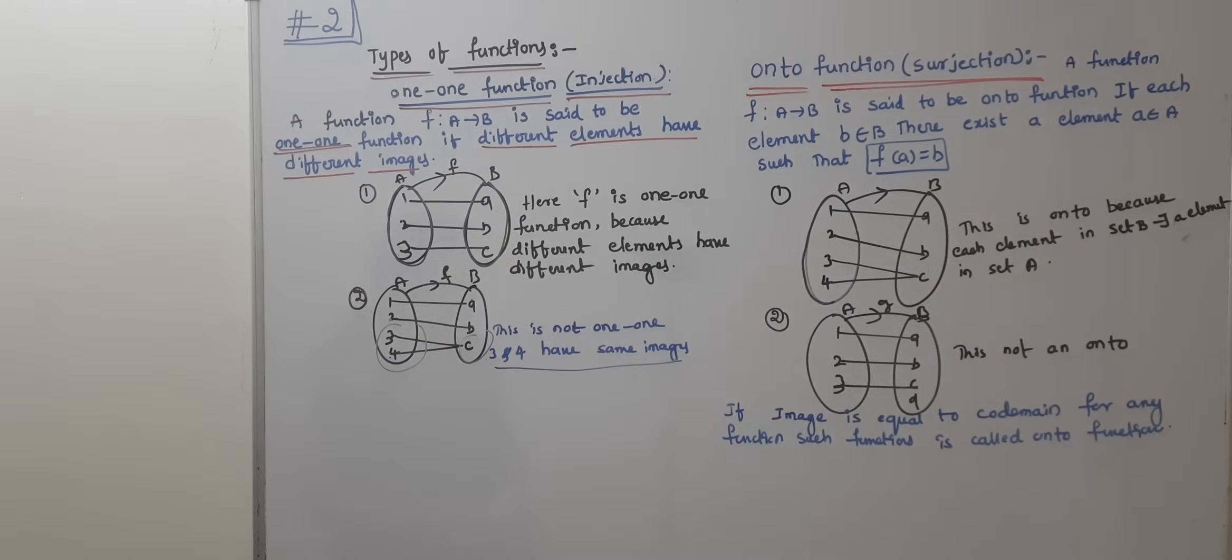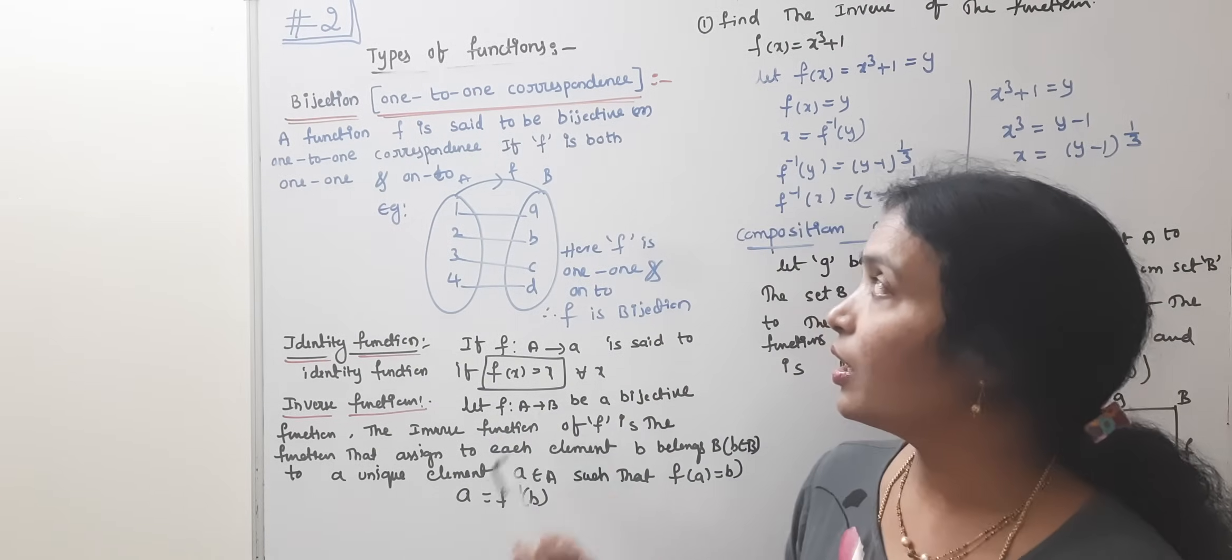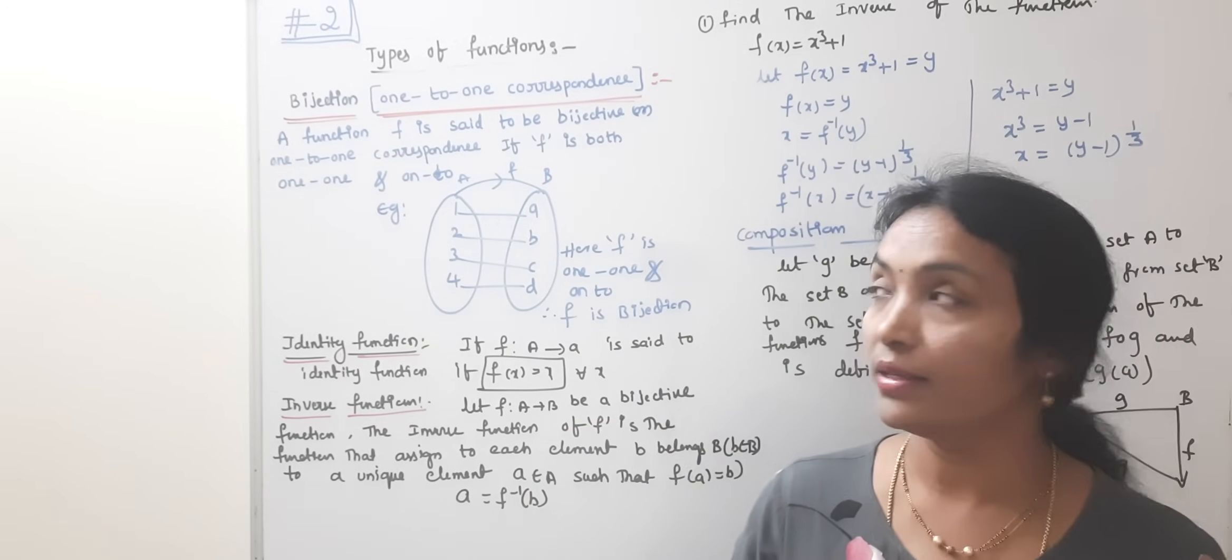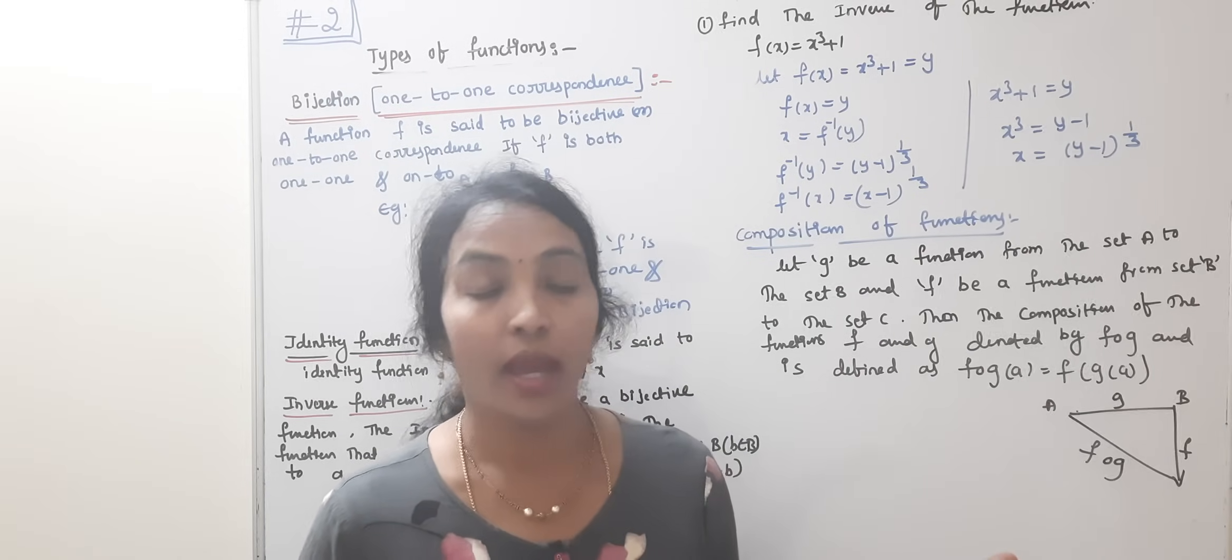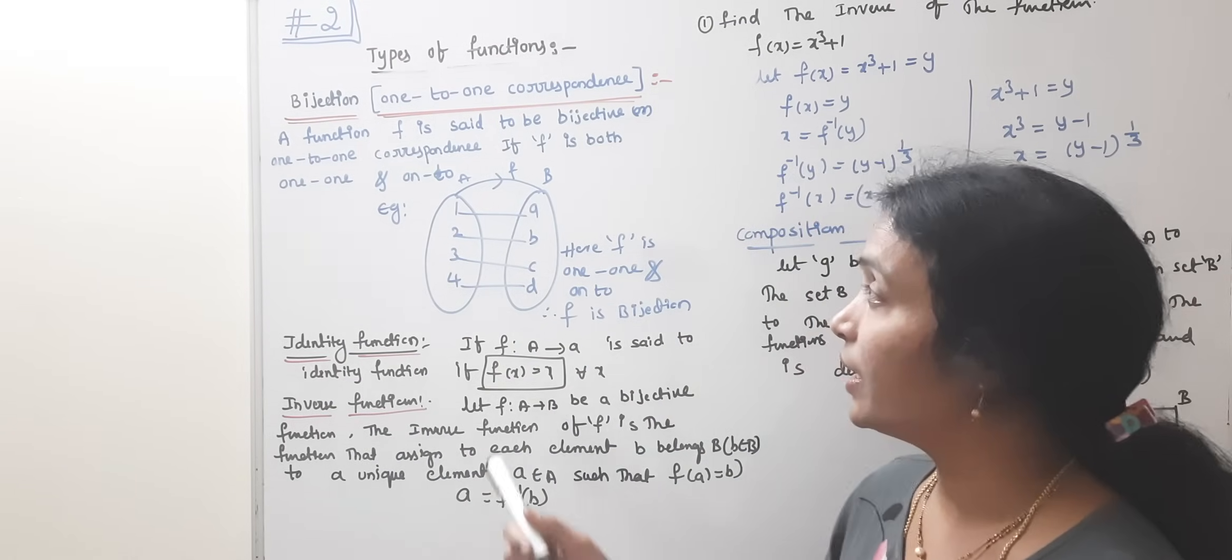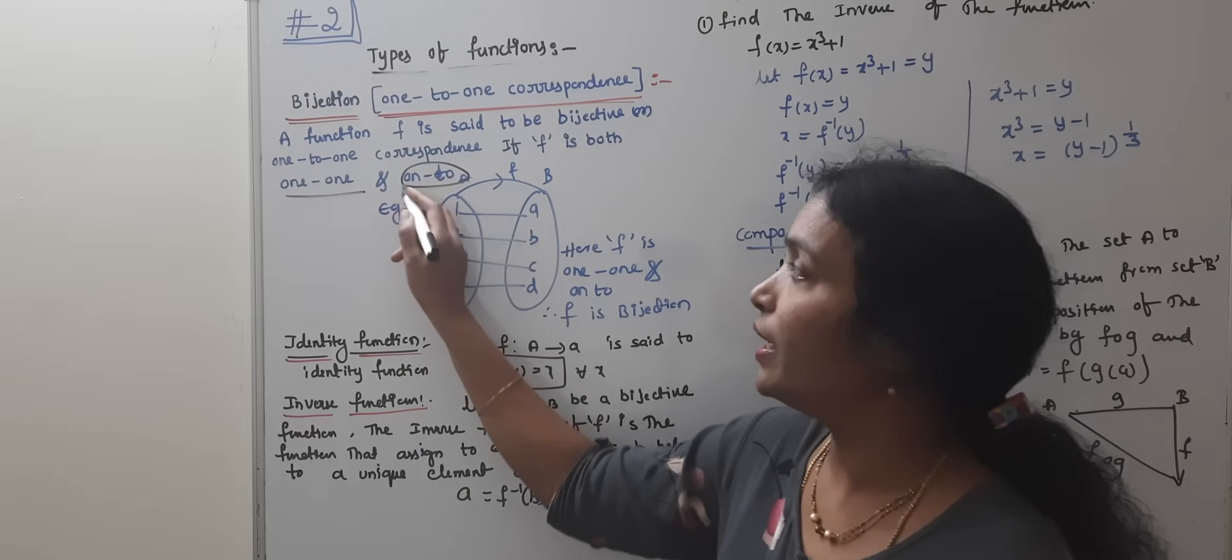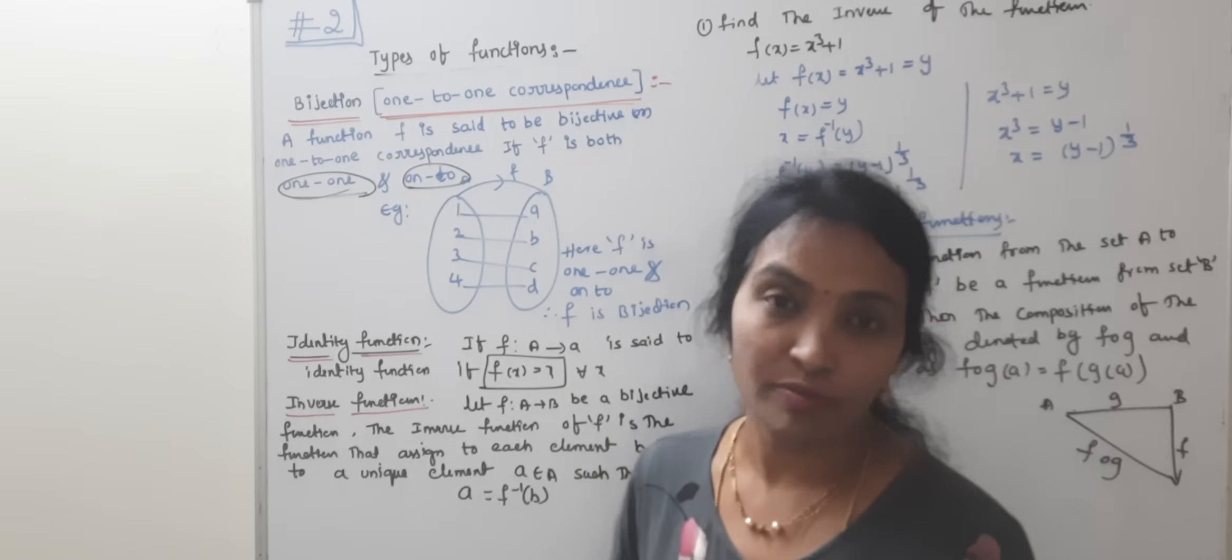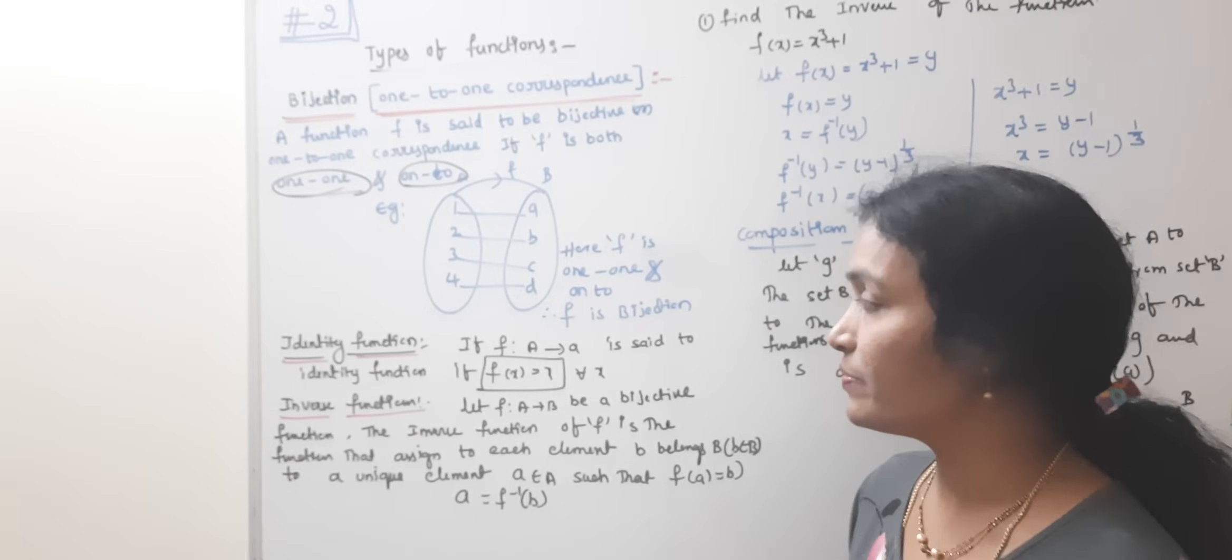Next is bijective or bijection function or one-to-one correspondence. It is both one-one and onto. One-one means every element of A is mapped with at least one element in B. Onto means every element of B is mapped with A. If both conditions satisfy, then it is said to be bijective. Therefore, it is a bijection or bijective function if it satisfies both one-one and onto.